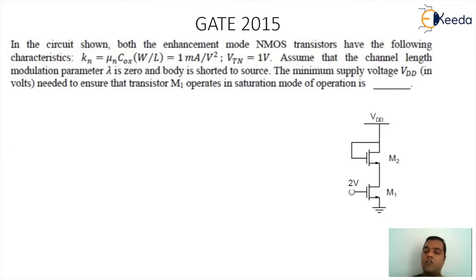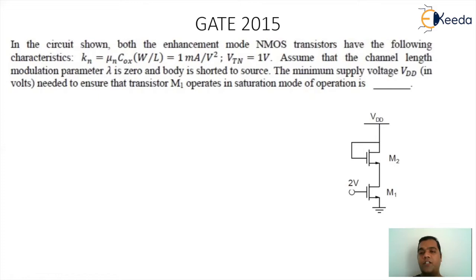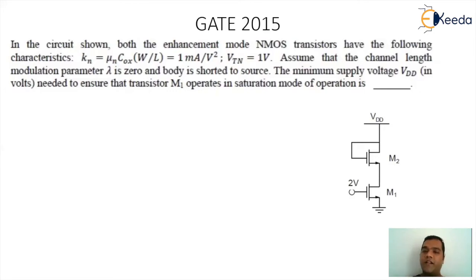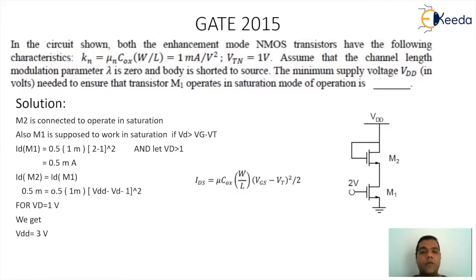For MOSFET 2, the drain and gate terminals are shorted, so VD = VG, which means VD is always greater than VG − VT. This ensures MOSFET 2 is always in saturation. For MOSFET 1 to be in saturation, VD1 must be greater than VG1 − VT. The gate voltage of MOSFET 1 is 2V, which equals VGS1. We first find the drain current of MOSFET 1 using the saturation equation: ID = μn·Cox·(W/L)·(VGS − VT)² / 2.